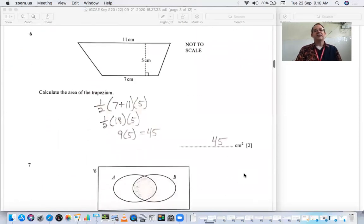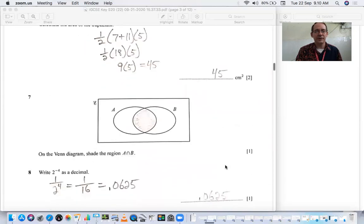Number 6, here we have calculate the area of a trapezium. Your formula is one half the sum of the two bases times the height. It's just plugging in the numbers, calculating it out to get 45.